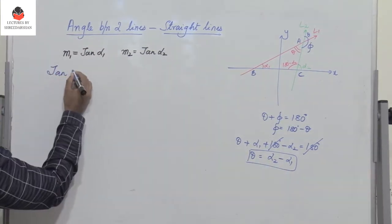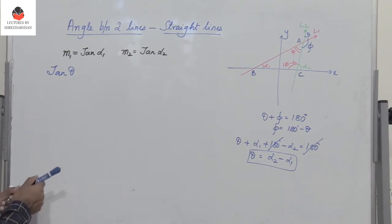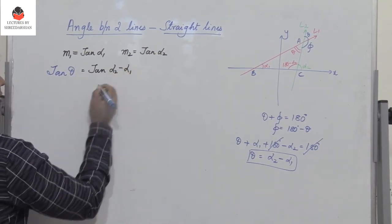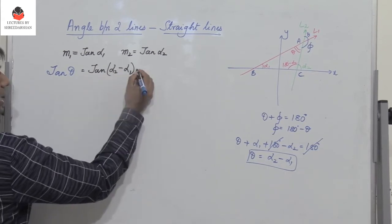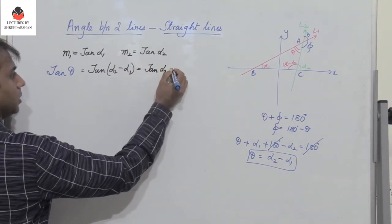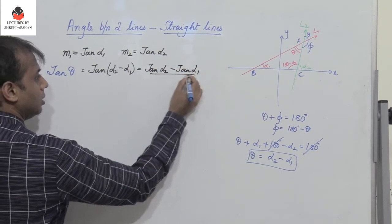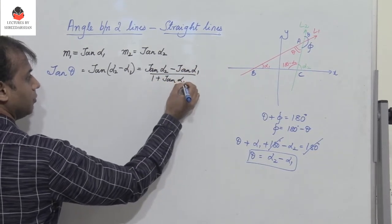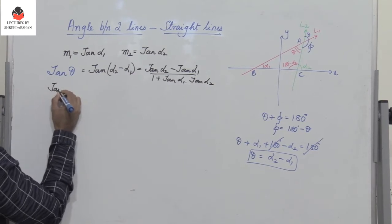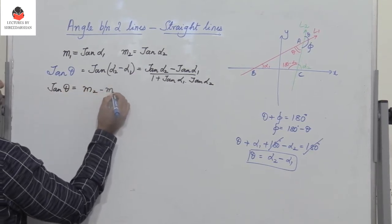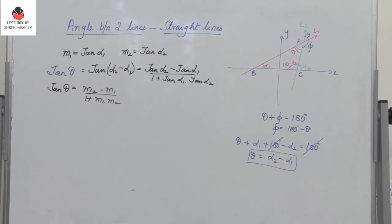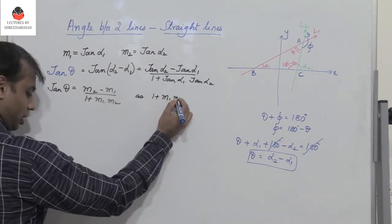Since theta equals alpha2 minus alpha1, we find tan(theta) equals tan(alpha2 minus alpha1). Using the formula tan(A minus B) equals (tan A minus tan B) divided by (1 plus tan A tan B), this becomes (tan alpha2 minus tan alpha1) divided by (1 plus tan alpha1 times tan alpha2). Since tan(alpha1) equals m1 and tan(alpha2) equals m2, tan(theta) equals (m2 minus m1) divided by (1 plus m1 times m2).